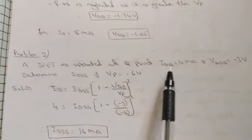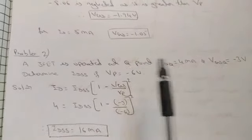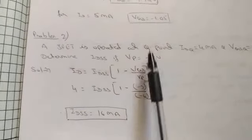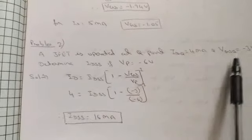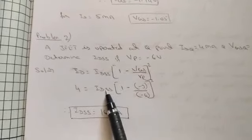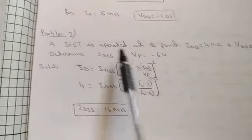Problem two: A JFET is operated at a Q-point where ID = 4 mA and VGS = −3 V. Determine IDSS if VP = −6 V (given). Using the formula ID = IDSS × (1 − VGS/VP)², substituting all given values and solving gives IDSS = 16 mA.